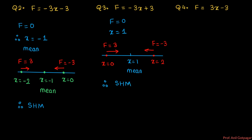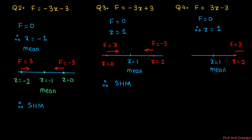Last problem: force equals 0, therefore x equals 1. So x equals 1 is our mean position. Take one point on right side, x equals 2: substitute in formula, f equals plus 3, so force is towards the right. Take left side point, x equals 0: substitute, force equals minus 3, meaning towards left. So forces are away from mean position, therefore it is not performing SHM.